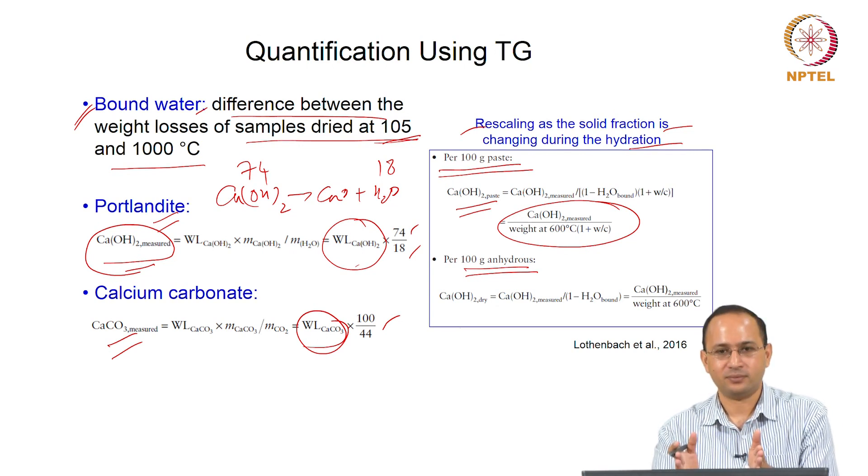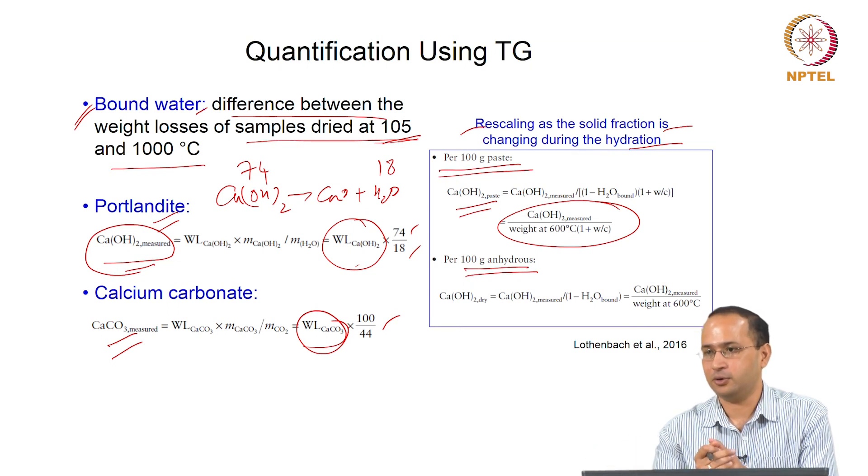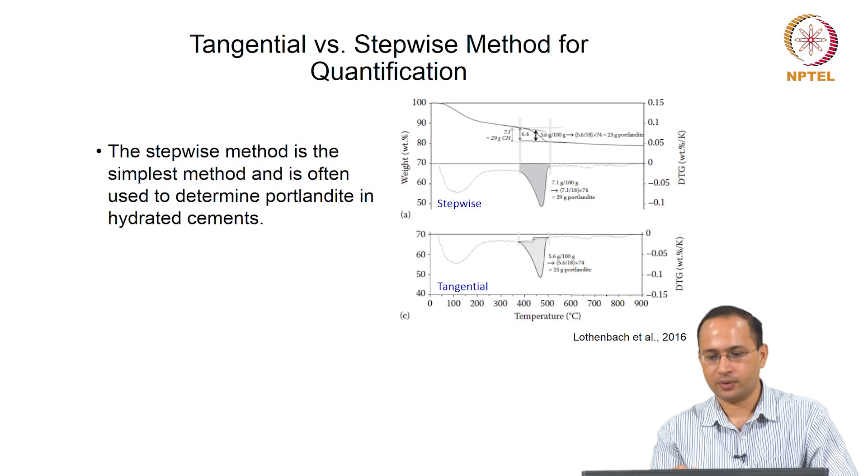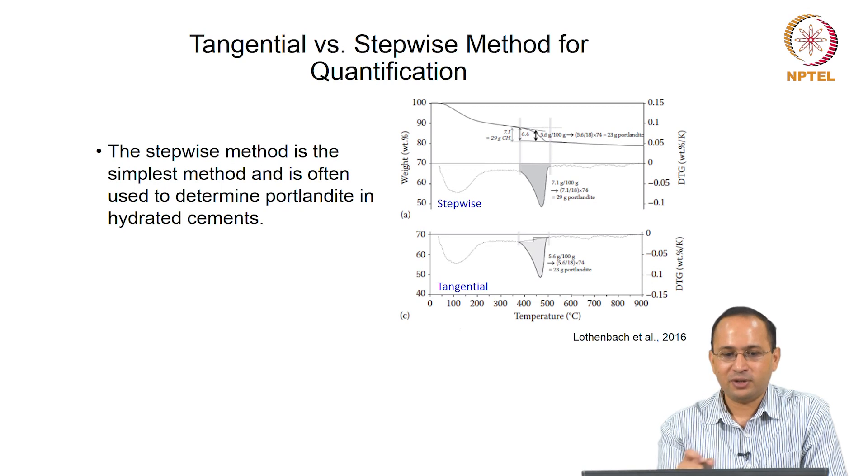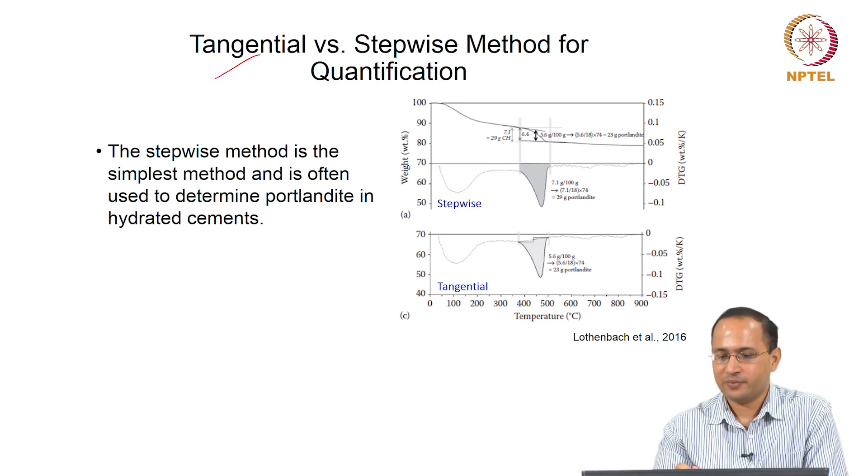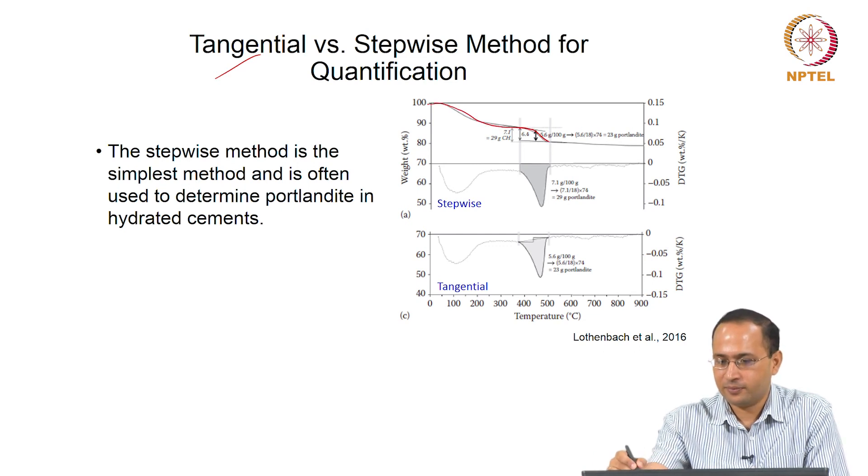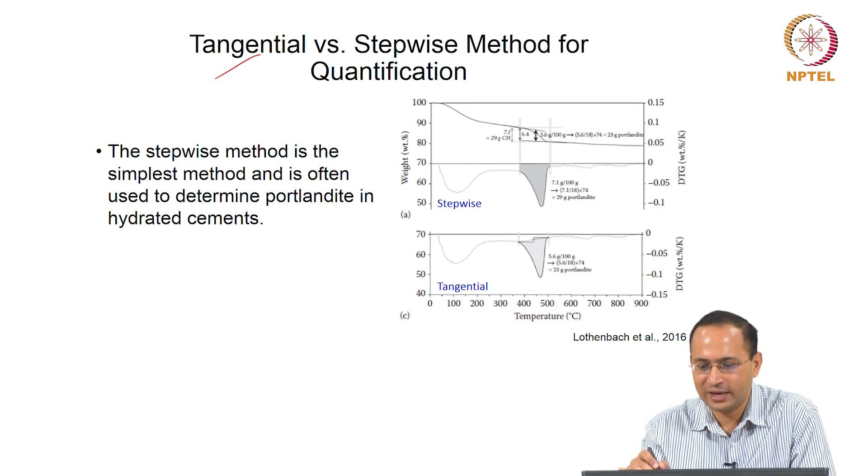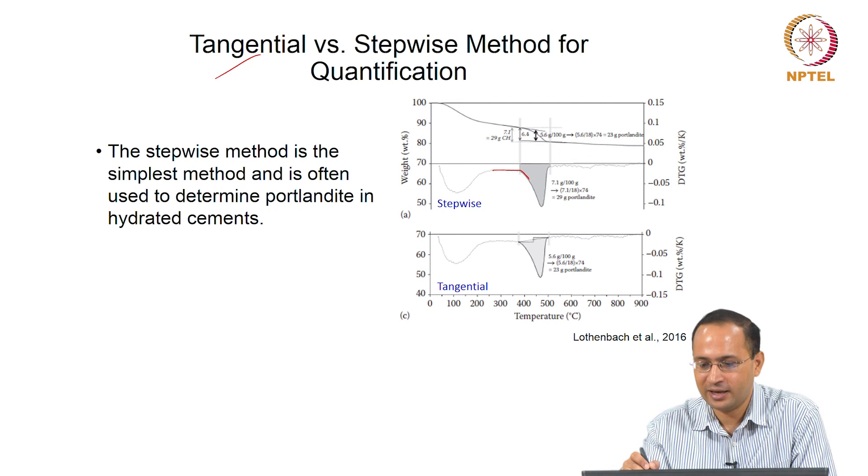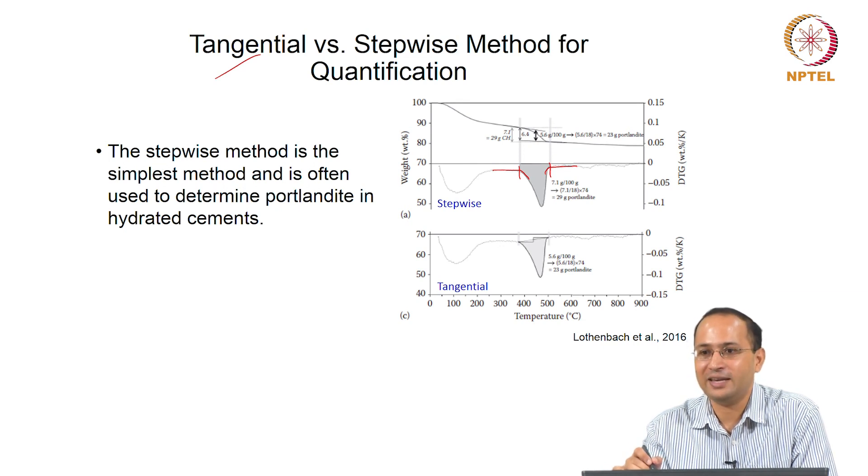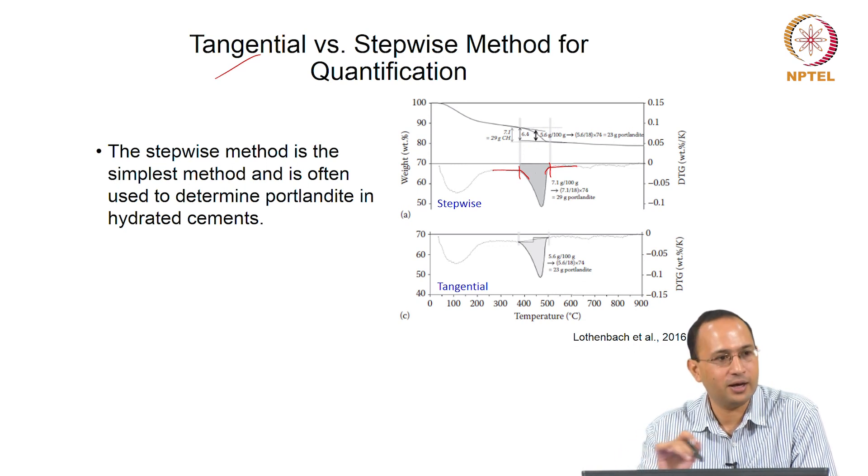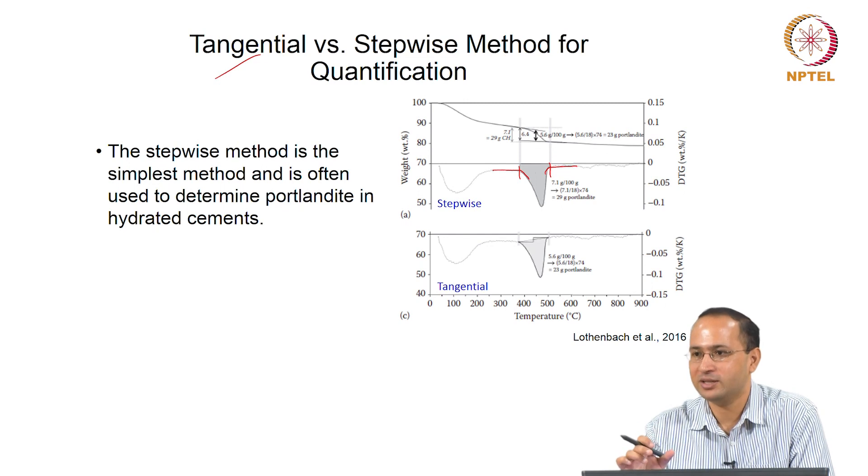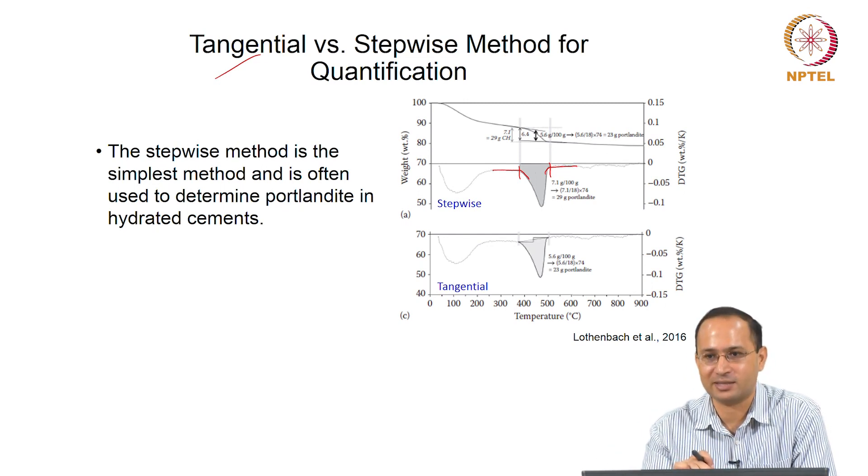Cement is hydrating - your solid fraction is changing with time. Cement is reacting, forming more CSH and calcium hydroxide. So you have to rescale. Once you know the measured value, then based on this formula, you can normalize it by 100 grams of paste or per 100 grams of anhydrous so that you can compare. If you have time series data - if you want to compare your data at 3 days, 7 days, 28 days - then it will be useful to do this. Same thing we discussed in X-ray diffraction.